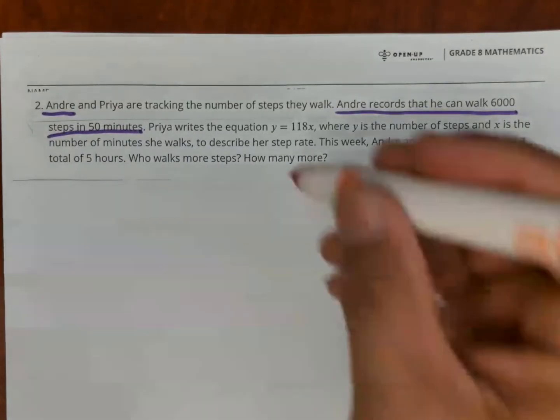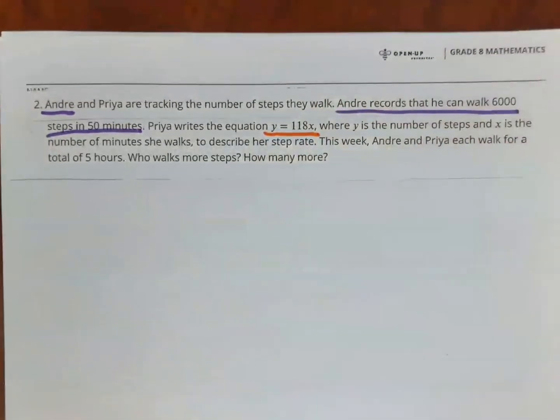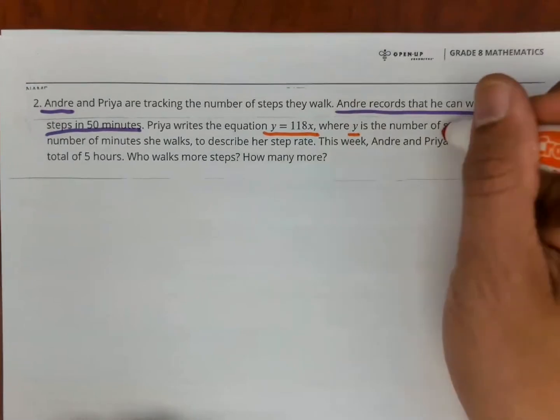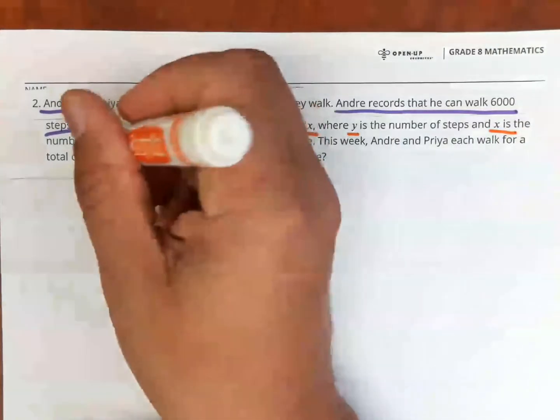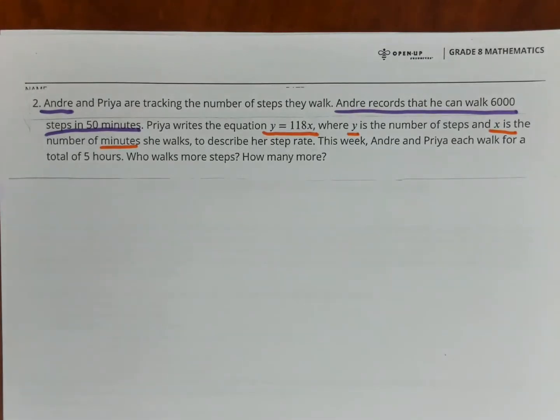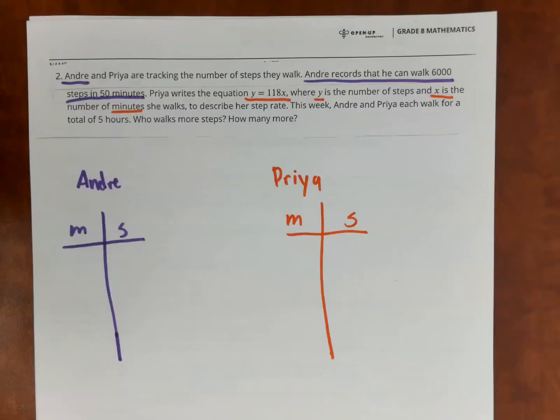Priya's I'm going to do in orange. Priya writes the equation Y equals 118X. Y is the number of steps, X is the number of minutes. So what I'm going to do for each one is I'm going to make a table. Since I'm comparing them, I want to compare the same things. So here I have the table for each one for Andre and Priya.